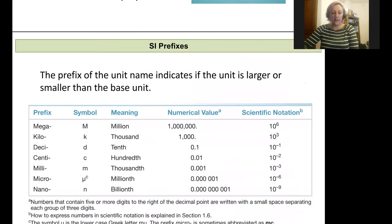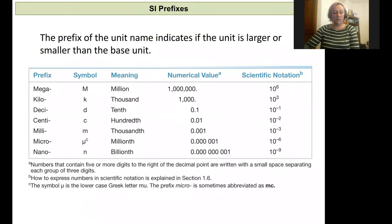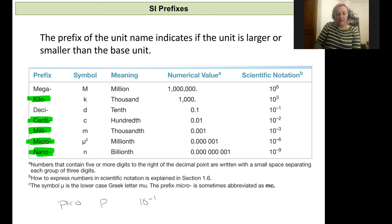In the metric system, we will utilize a base unit and then prefixes to modify the size of the unit. Here are the prefixes that we're going to use. The ones that I think are used the most that are really worth memorizing are kilo, centi, milli, micro, nano. We'll use pico as well, and pico with a lowercase p is going to correspond to 10 to the negative 12th in scientific notation. It's another three decimal places compared to nano.